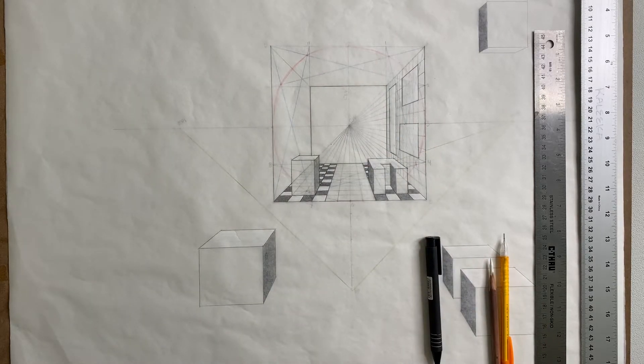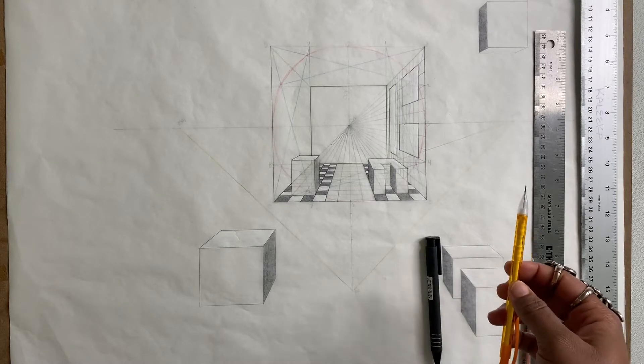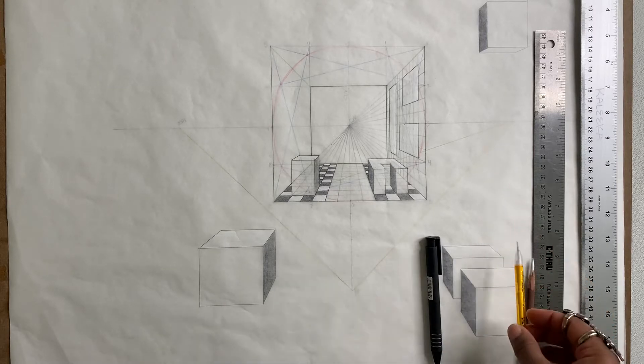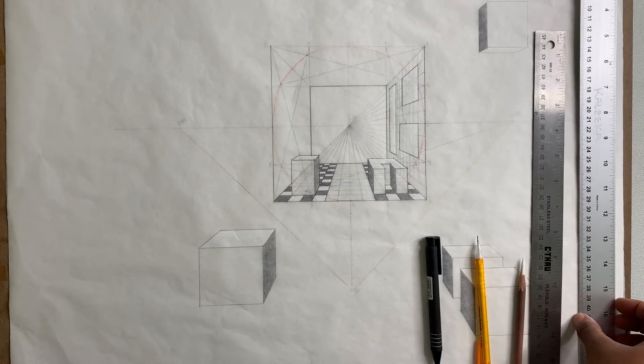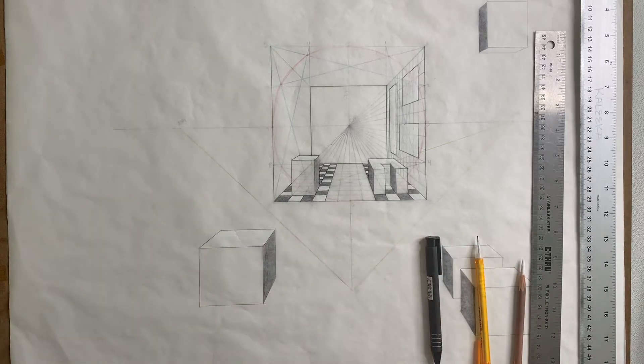So all you'll need for this assignment in step three is an eraser, your white charcoal pencil, an HB or an F pencil—I'll be using a mechanical pencil—ruler's optional, and then your T-square and obviously the drawing you started before.